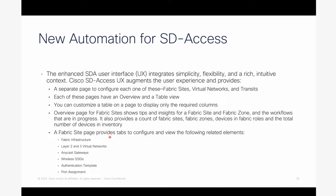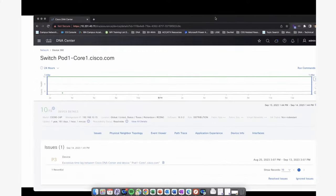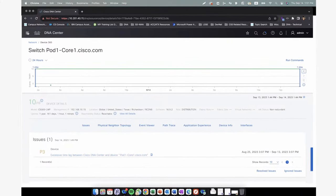For the virtual network page, it provides multiple tabs: Layer 2 virtual networks, Layer 3, fabric infrastructure, settings for anycast gateway, wireless SSID port assignment, and authentication template. Under SD Access in the demo, you have separate pages for fabric sites and transits. Under fabric sites, the summary shows how many fabric sites, fabric zones, devices, and total devices you have, along with information on what a fabric site is and how to create one.